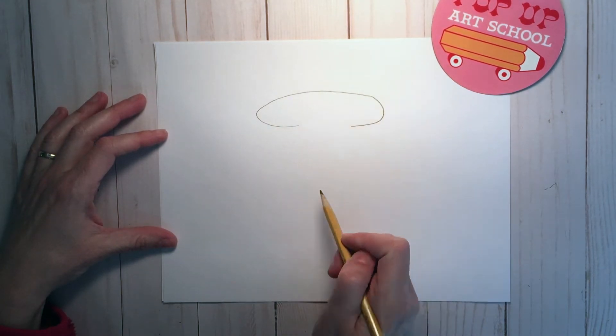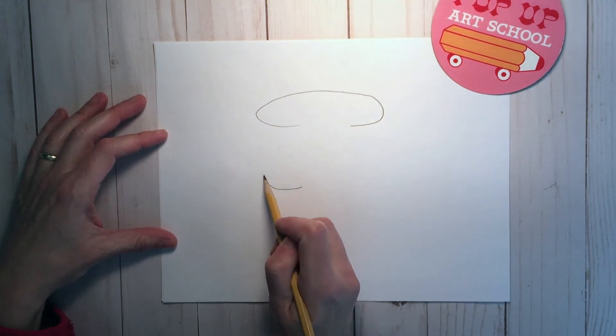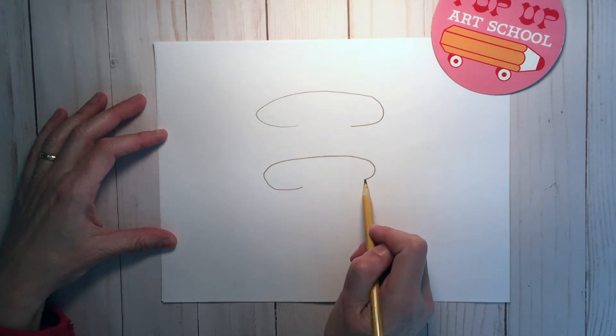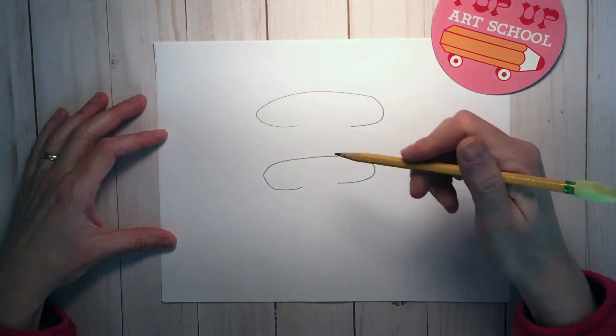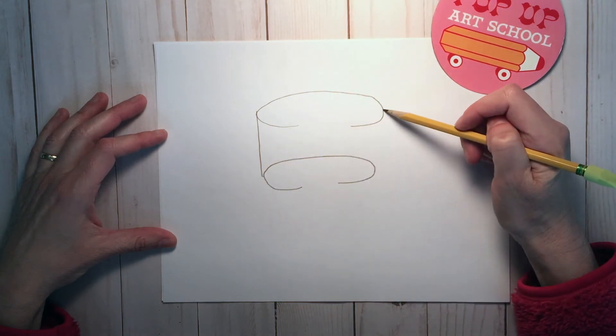Alright, we're going to start with pencil and we're going to make two letter C's that have been flipped over on top of each other. Then you're going to connect the sides with a straight line.